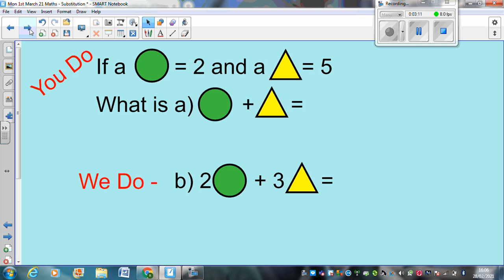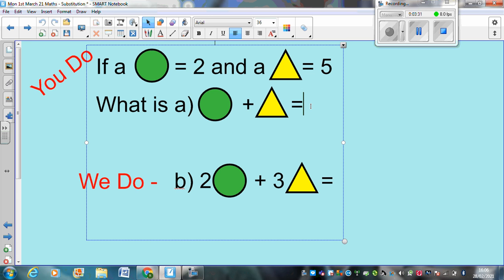Let's have a look at this. I bet you can do this first one. If a circle equals 2 and a triangle equals 5, what is a circle plus a triangle? Pause now and tell me the answer. Okay. That's right. A circle equals 2 plus 5. Two plus 5 equals 7. Simple as that. I'm sure you all got that.